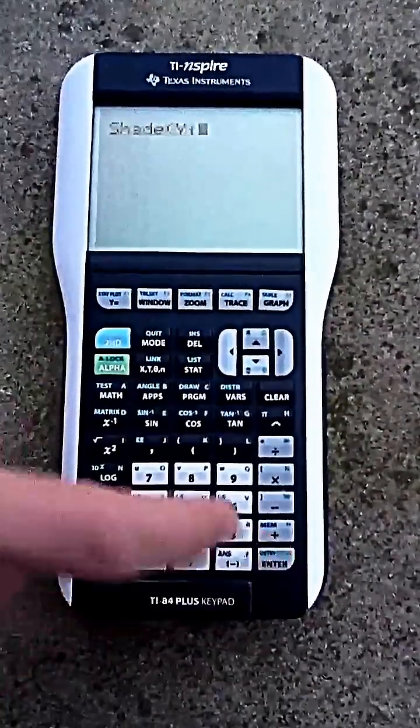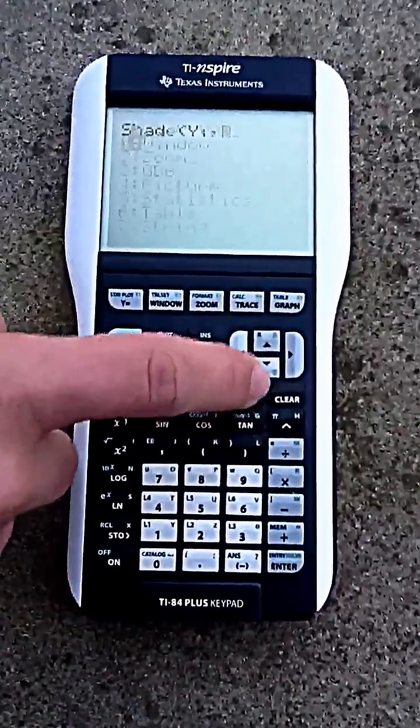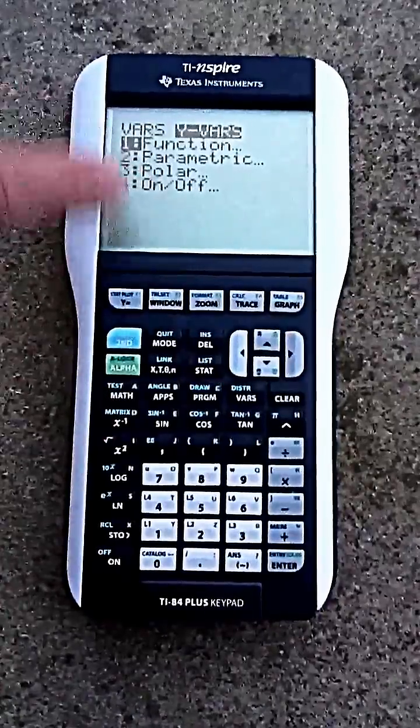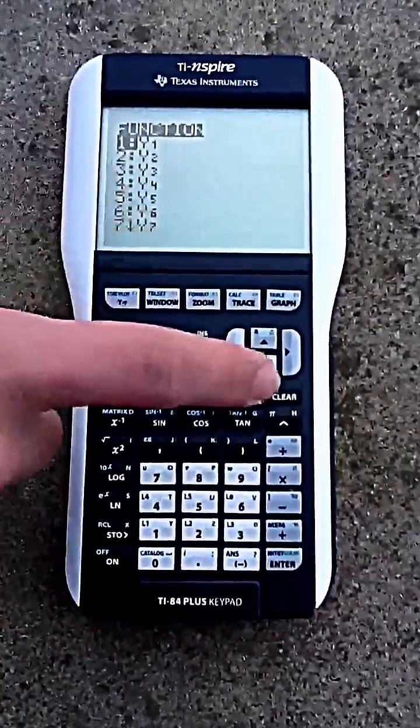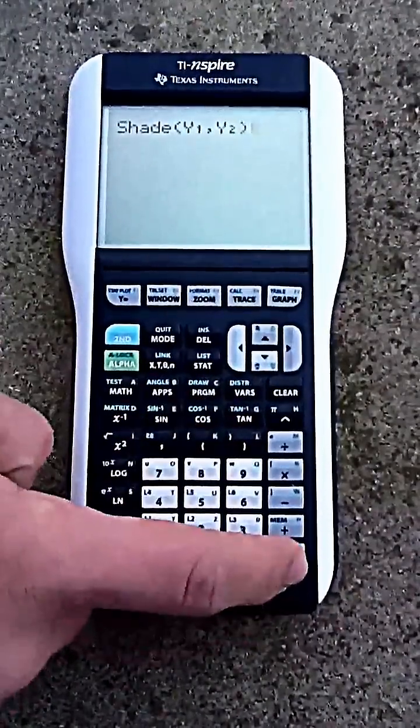Y1, which is the equation you put in the first time. Then you're going to use the comma button and put in vars again. Go to the same place, functions. Go down to Y2, put that in, close your parentheses. Then you click enter.